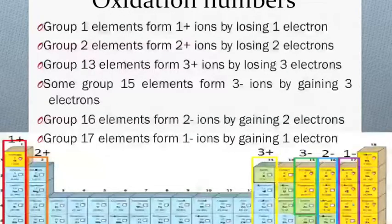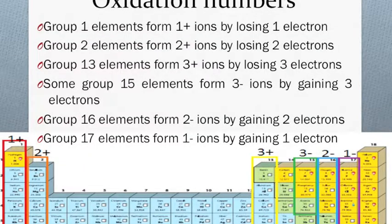For instance, all group one elements have only one valence electron, so they form stable ions by losing one electron, producing an ion with a charge of positive one. Group two elements lose two electrons, forming positive two ions. Group 13 elements form positive three ions when the atoms lose those three electrons.